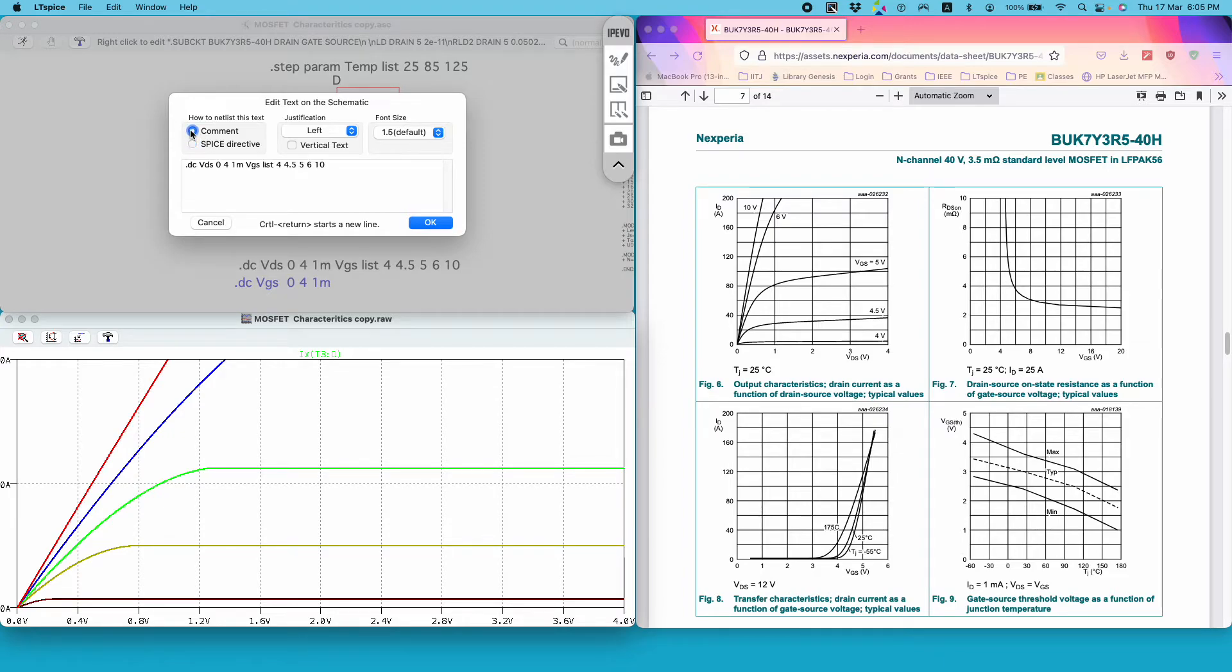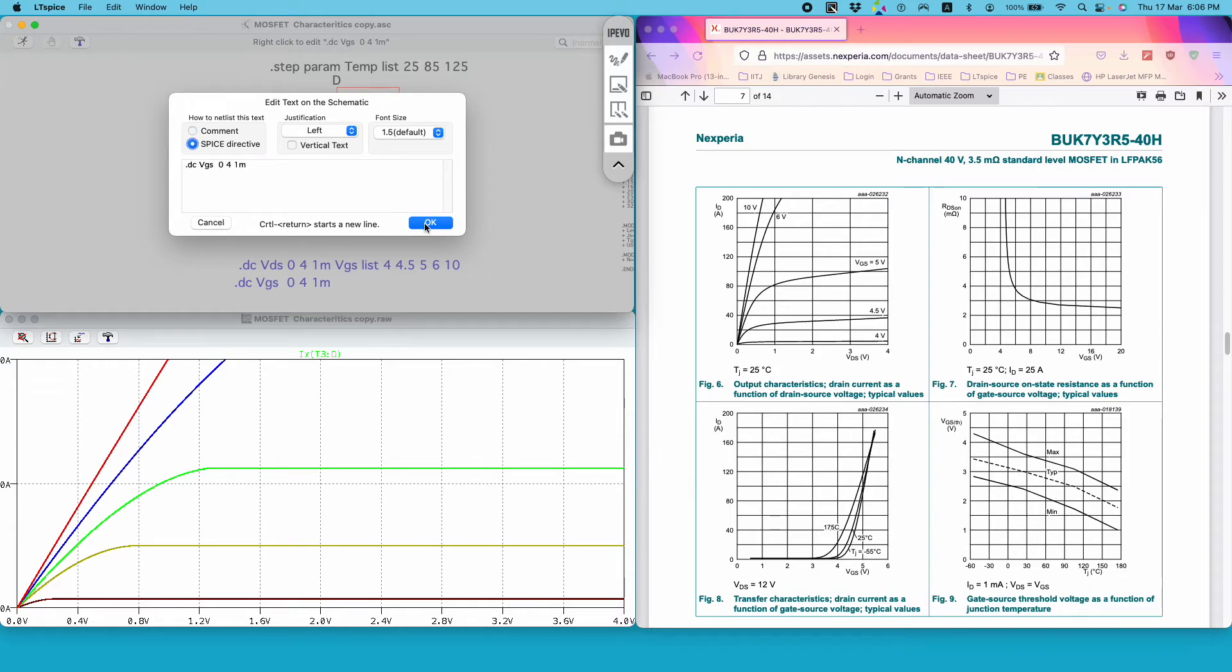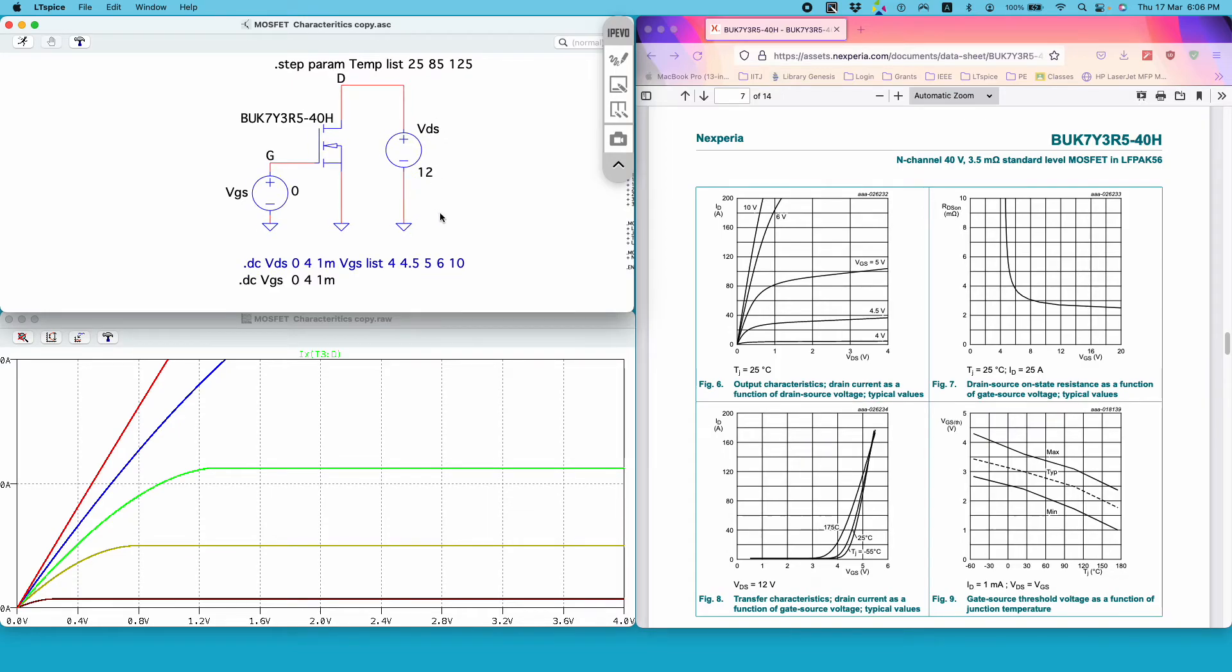So I am disabling this command and enabling this DC sweep. So now I am sweeping the gate to source voltage and my drain to source voltage is fixed at 12 volts. So if I run the simulation...